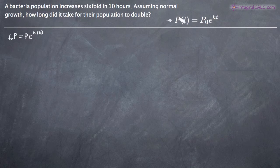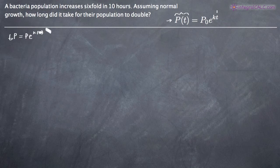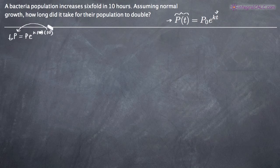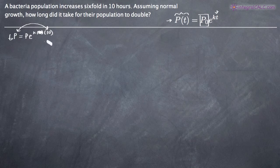This equation p of t models the population at time t. So if we plug in ten for t — because it's ten hours — we know the population is six times the original population. So it's a relationship between t and p of t. At ten hours, the population is six times the original population, and the original population is modeled by p sub-zero, which we just call p. So 6p equals p times e to the k times ten.